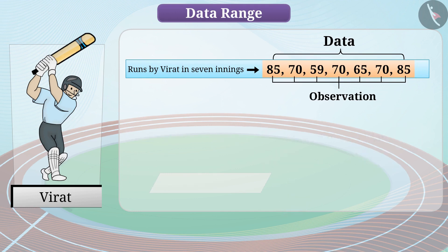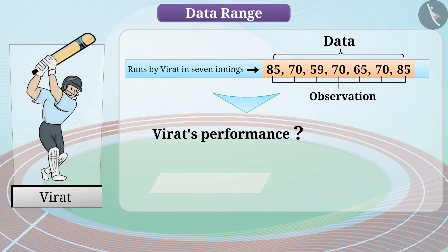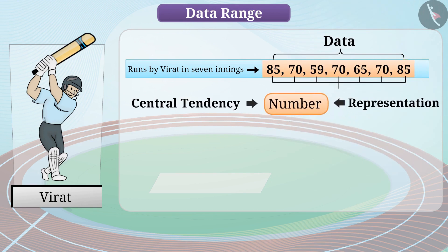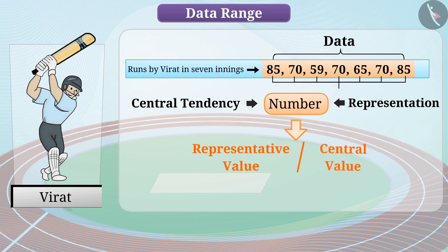Considering that we have collected data for some innings, we know how Virat has performed in these innings. However, it is difficult to get information about Virat's performance in all his innings as his performance must have varied. In such situations, we need a number that can represent this group of observations — a central tendency for the entire data set. We call this number a representative value or central value.